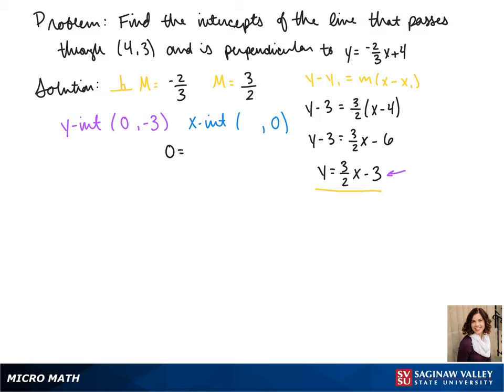To find our x-intercept, we plug in a 0 for y. That gives us 0 equals 3 halves x minus 3. We add 3 to the other side. That gives us 3 equals 3 halves x. We multiply both sides by 2 thirds so that x is by itself. That gives us our x-intercept of 2.